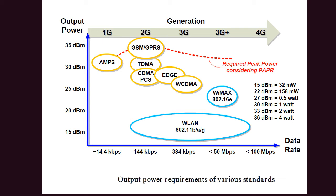5G has very challenging bandwidth requirements, but its peak-to-average power ratio (PAPR) is somewhat similar to 4G, in that it has to handle signals with very high PAPR. For power amplifier designers, the obvious architectures that come to mind are Doherty amplifiers, envelope tracking, or EER-type architectures — and these are indeed very hot topics in 5G, which will be discussed in later videos.